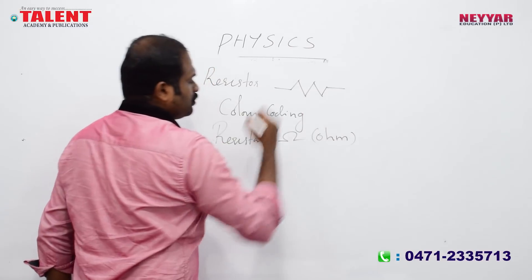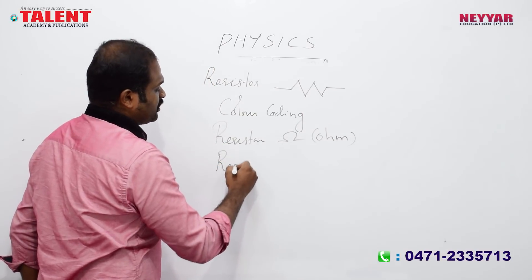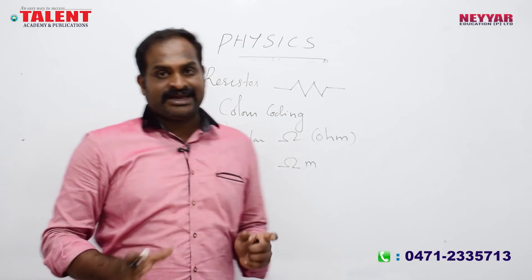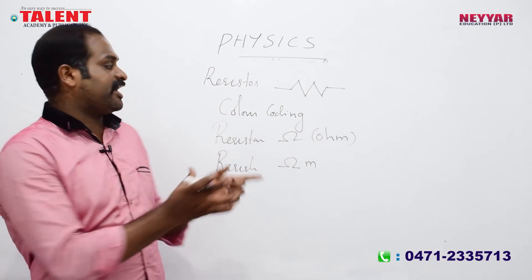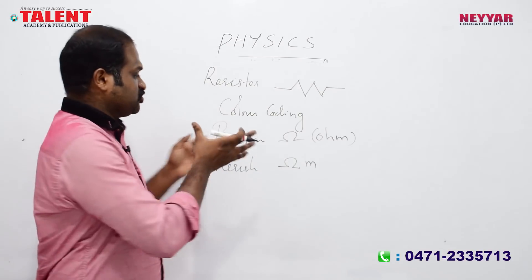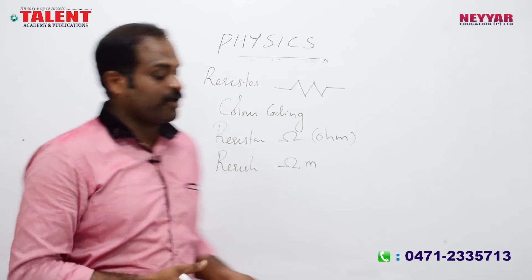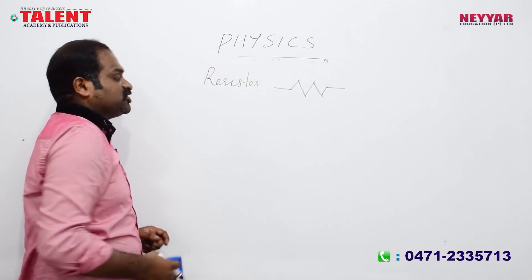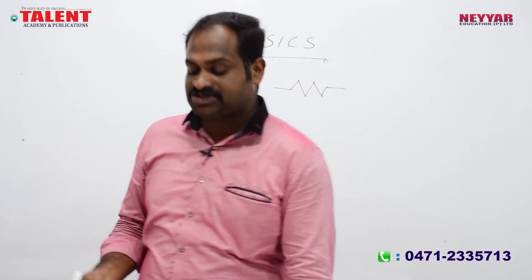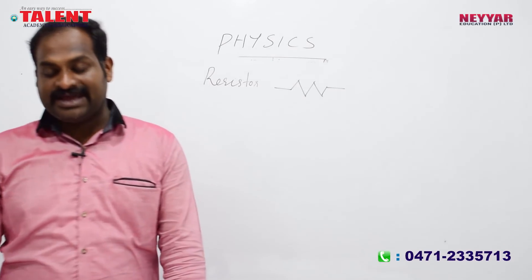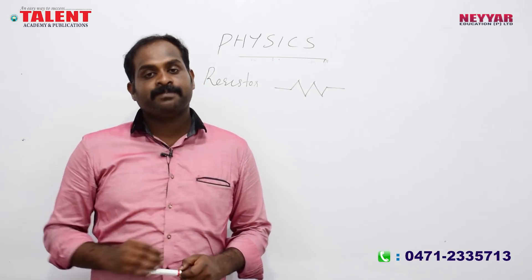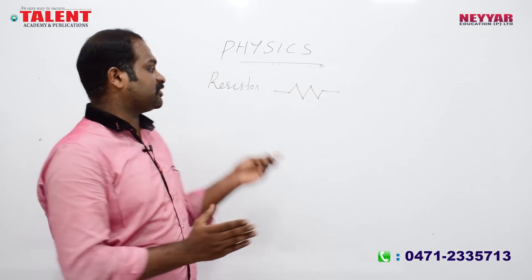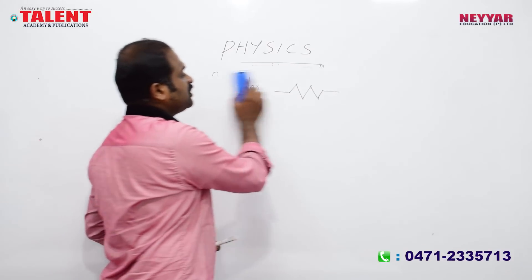The resistance unit is the ohm; the resistivity unit is the ohm-meter. Resistors control the limit of current. There are fixed resistors and variable resistors. For variable resistors you can adjust the value; for fixed resistors the value is determined by color coding.